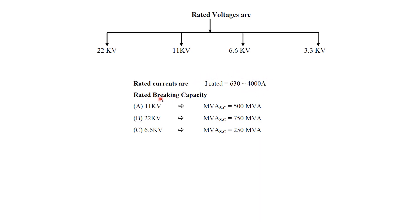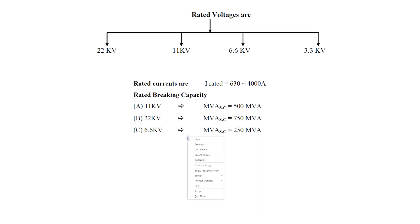We also have the rated breaking capacity, which we must select. This depends on the voltage level. For example, at 11 kV the rated breaking capacity may be 500 MVA or 750 MVA, and at 6.6 kV it is 250 MVA. So what does MVA short circuit actually mean?